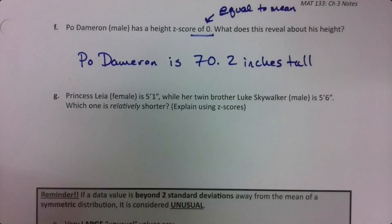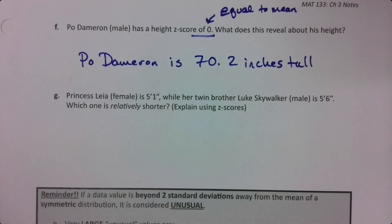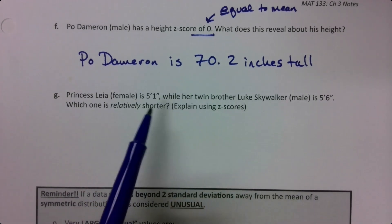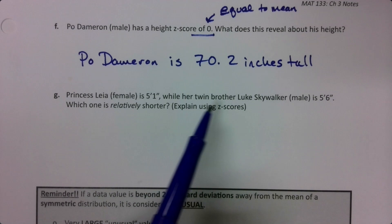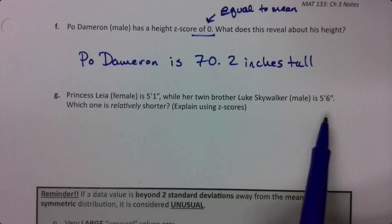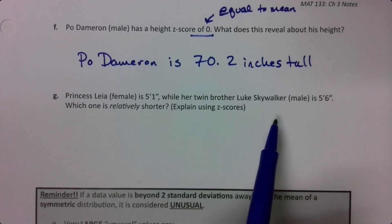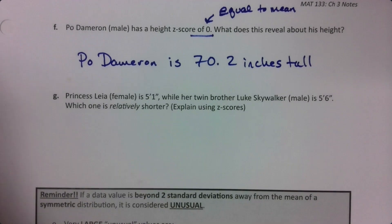Now let's deal with some people that are shorter than the mean. Princess Leia, who's female, is five feet one inch tall, while her brother Luke is five feet six inches tall. Who is relatively shorter?